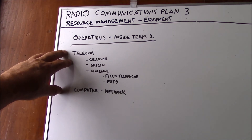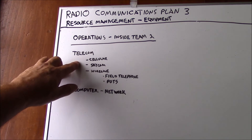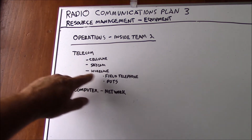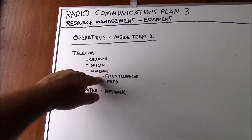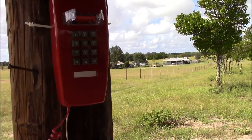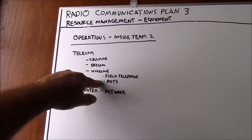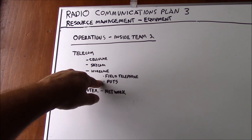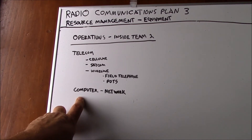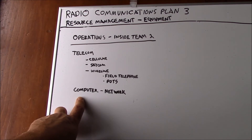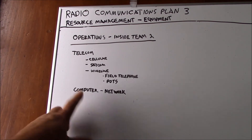Another consideration for operations is telecommunications — that could be cellular, satcom, or wireline, including the use of a field telephone. Establishing your own wired phone network between fixed locations is a really great idea. Should the plain old telephone service still be up and running, being able to establish a dial tone on a twisted pair is valuable. Computer and IP networking is also important — whether you establish a wired or wireless network, you want to maintain the ability to build your own internet, set up a computer as a server, put an entire library on it, and move data back and forth within your network.